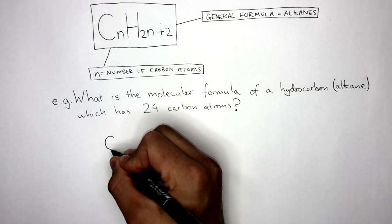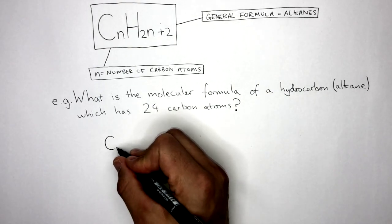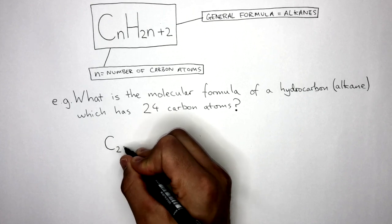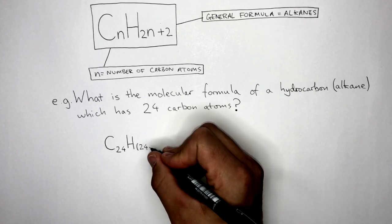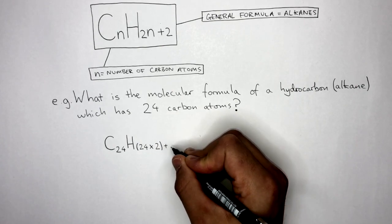Remember, n equals the number of carbon atoms, so we write C24. The number of hydrogen atoms is equal to 2 times 24 plus 2.